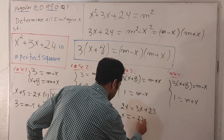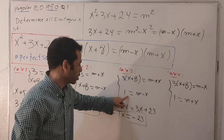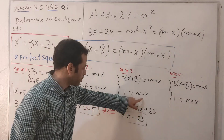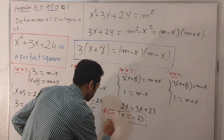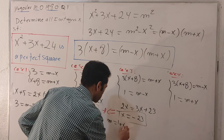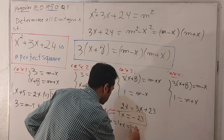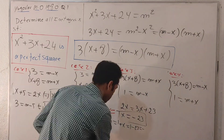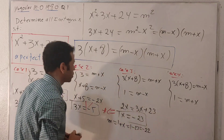With x = minus 23, it's simple to find m. From 1 = m minus x, we get m = 1 + x = 1 + (minus 23) = minus 22. So for case three: x = minus 23 and m = minus 22.